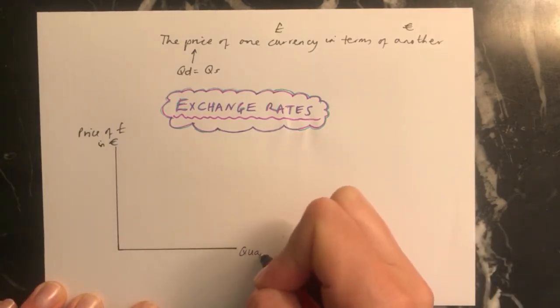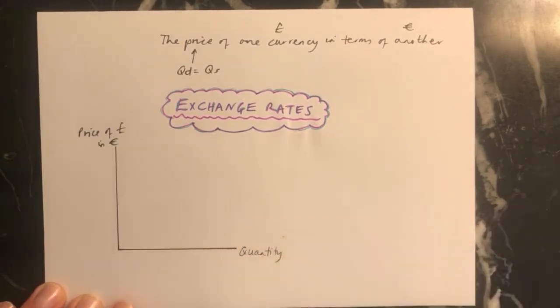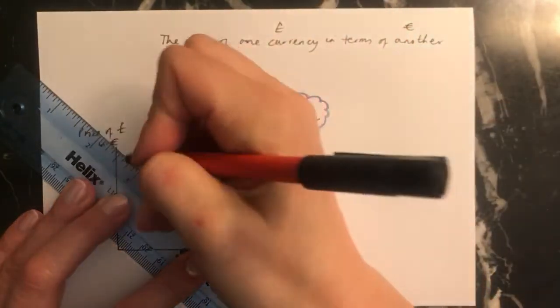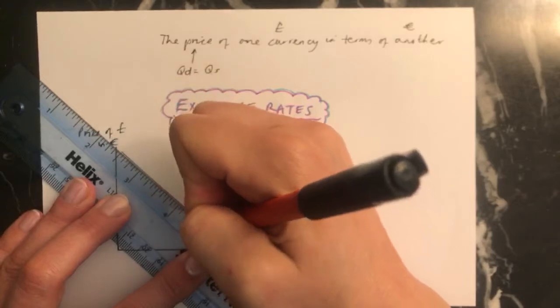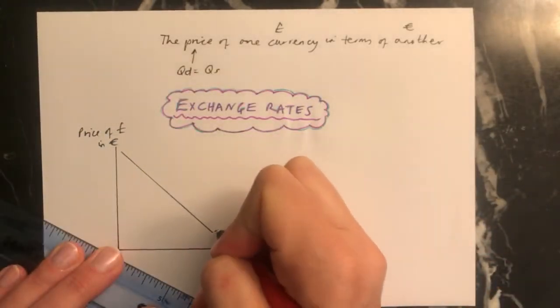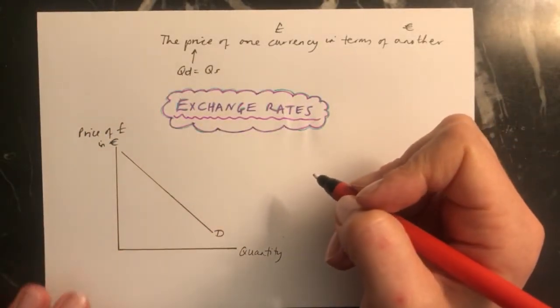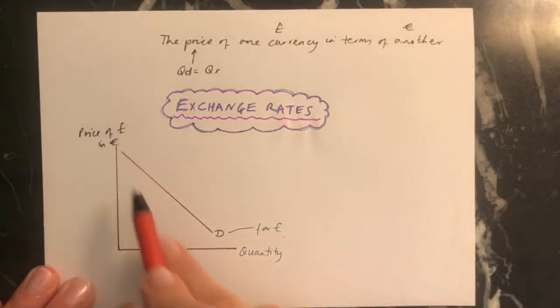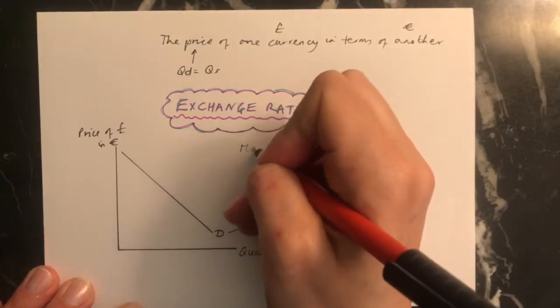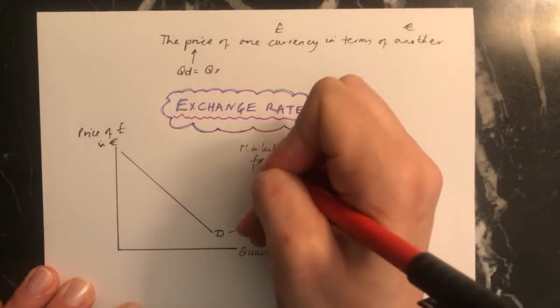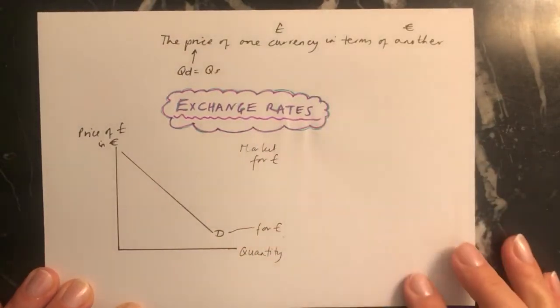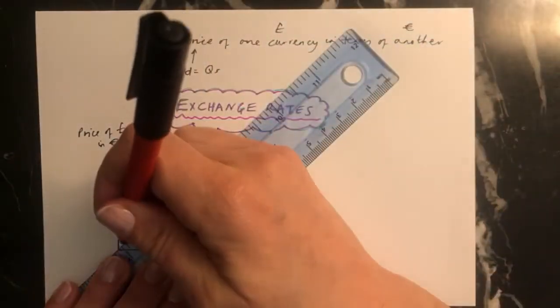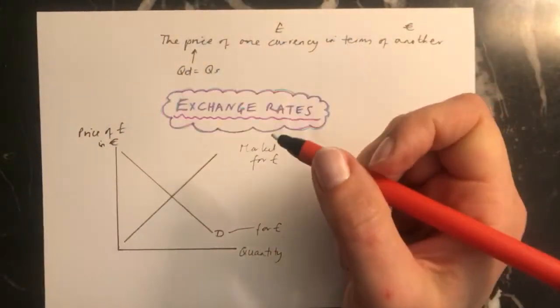And then as normal, this is your quantity. So then all you need to do is put in the demand, down for demand. And that, remember, is the demand for pounds, because we're looking at the price of pounds. This is all about the market for pounds. And then you need to put in the supply of pounds.